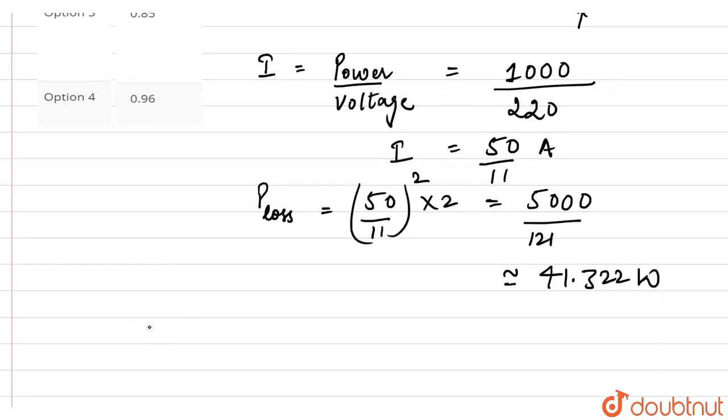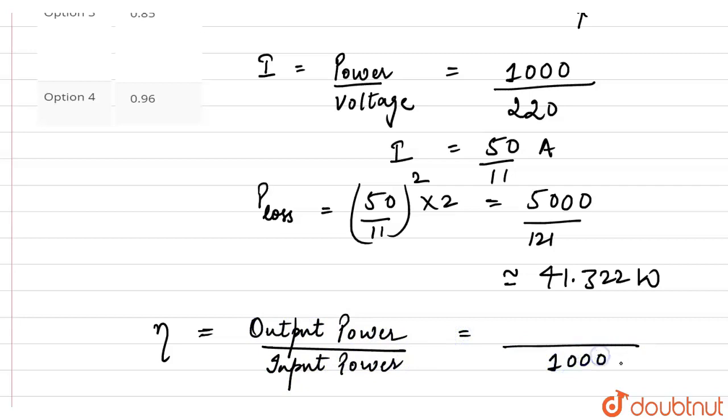Now we know that efficiency is equal to output power divided by input power. The input power was 1000 watts. The output power was 1000 minus the power loss, which is 41.322 watts.